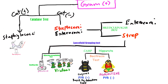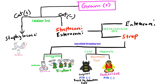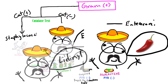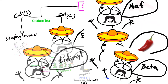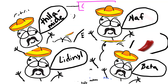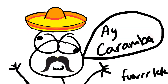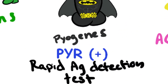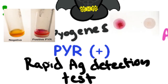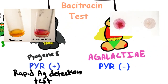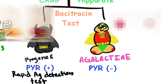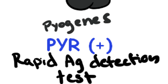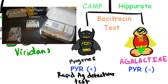The test works by checking if streptococci can enzymatically hydrolyze L-pyrolydenyl-beta-naphthalamide. For strep pyogenes, it's PYR positive. For throat cultures, we can use the rapid antigen detection test.